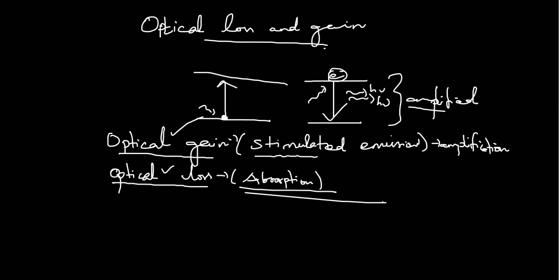Good day, students. Today we are going to see about optical loss and gain. We are discussing the light-matter interaction, particularly the interaction between semiconducting materials — what will happen when light interacts with a semiconducting material. Here we focus on optical loss and gain during the process of absorption and emission.